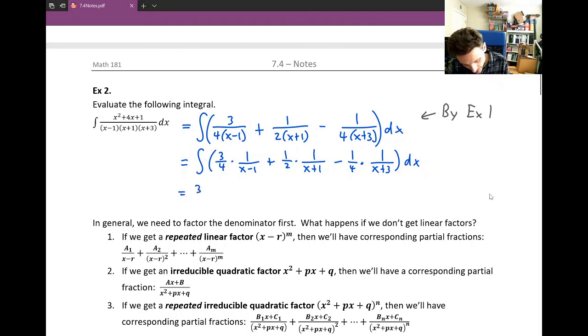So we have (3/4) times the integral of 1/(x-1), which is ln|x-1|. Remember ln's get absolute values. Then (1/2)ln|x+1| - (1/4)ln|x+3| + C.